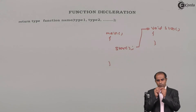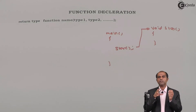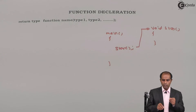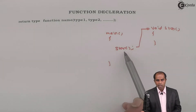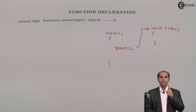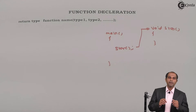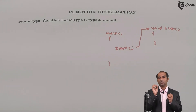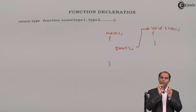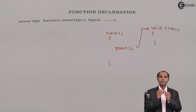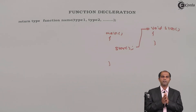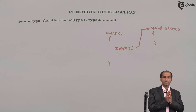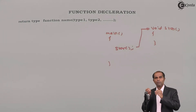I'll put a declaration of a and b and then start using them. Similarly, if I'm going to use a function, I need an instruction which declares the details about that function. This particular instruction which declares the details about the function is called a function declaration or a function prototype. In simple words, a function declaration is an instruction which gives the complete details about the function — like the name, the return type, the number of values it accepts, and the type of values it accepts.